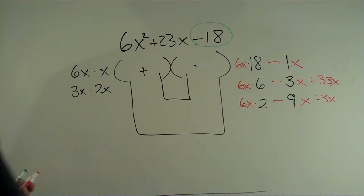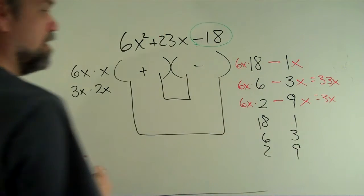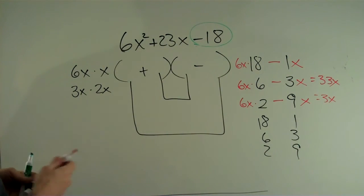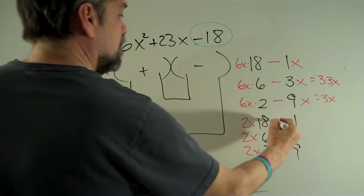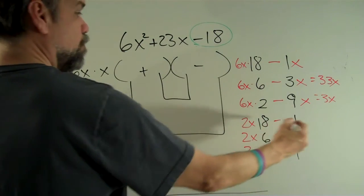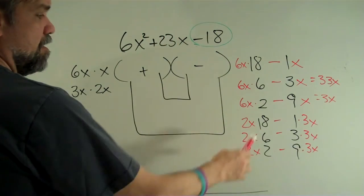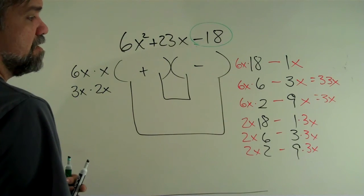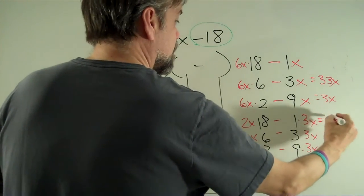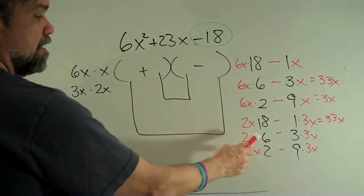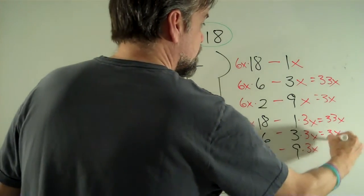Okay, so let's try 18, 1, 6, 3, 2, 9. Let's try them with 3x and 2x now. And like I said, I'm going to do 2x times 18, 2x times 6, 2x times 2. And this is going to be 1 times 3x, 3 times 3x, 9 times 3x. Okay, 2x times 18 gets me 36x minus 3x is 33x again. That's not going to work. 2x times 6 is 12x minus 9x equals 3x again. That's not going to work.